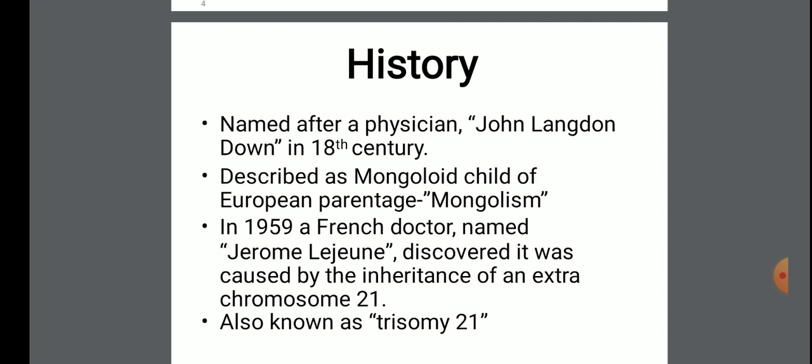Chromosome 21 is one of the 23 pairs of chromosomes in humans. Chromosome 21 is both the smallest human autosome and chromosome, with 48 million nucleotides representing about 1.5% of the total DNA in the cells.